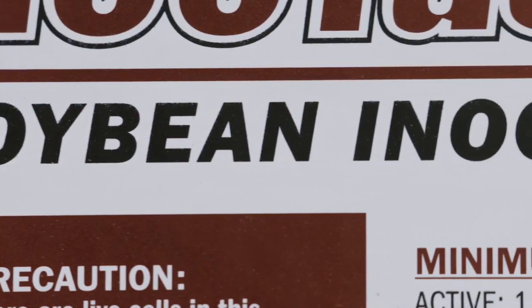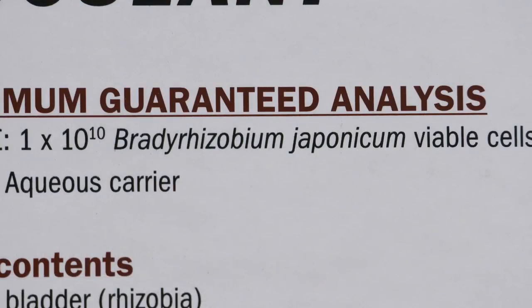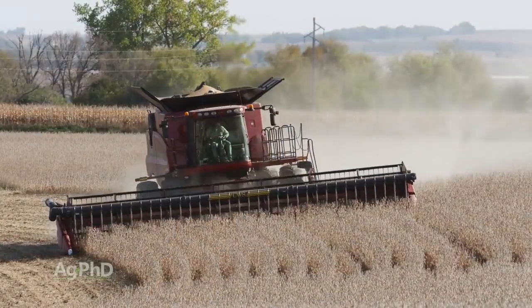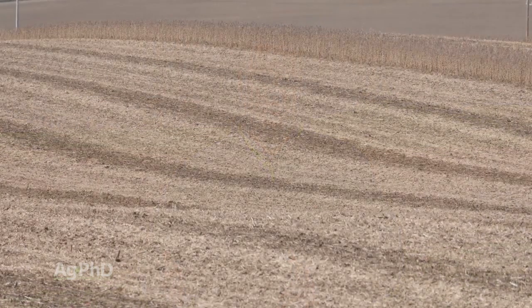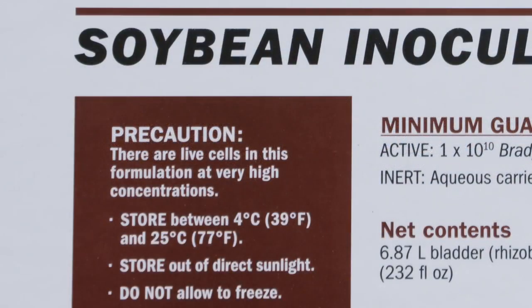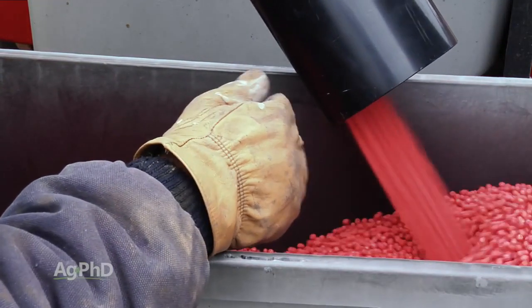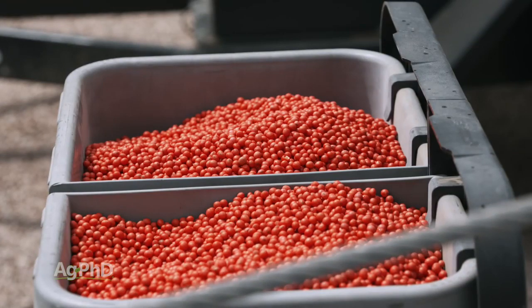Inoculant is the one I wouldn't cut — I absolutely wouldn't cut it. It only costs a couple of bucks. You might not gain tremendous yield, but for a couple bucks you only need to gain a quarter of a bushel. Most of the time we gain at least that, sometimes we gain five — it all depends on the year and soil type. Even if we don't gain a lot of yield, a lot of times we've put more nitrogen in the soil, and even three more pounds for next year starts to dollar up. One important note: inoculants are live bacteria, so put them on just before the seed goes in the ground. If you treat them a month in advance, you'll lose some of them.